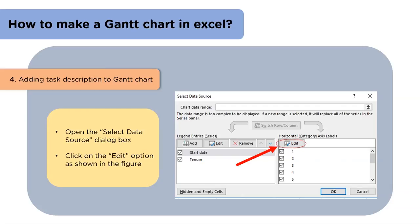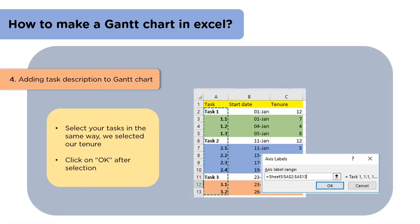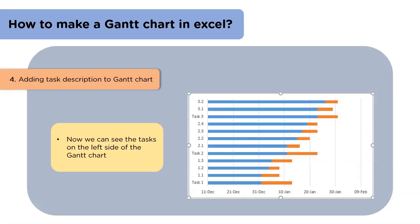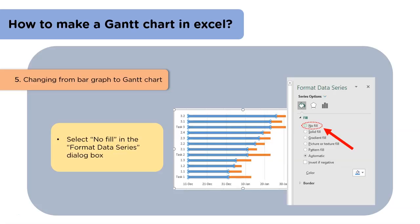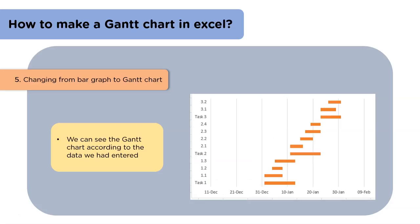The fourth step is adding description to the Gantt chart. We will open the box again and select the Edit option. Then we will select the tasks as we had selected the duration of the tasks before, and click on OK. We can now see the tasks have appeared towards the left side of the Gantt chart. The fifth and remarkable step will help us convert this bar graph into a Gantt chart. We will click on the bars and select the Format Data Series option from the menu. Then in the Format Data Series dialog box, we will select the No Fill option. We can now find our Gantt chart on the screen.